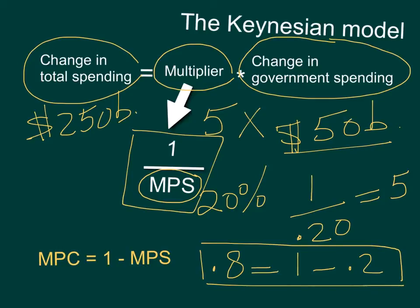So a problem might say the MPC is 0.8 and the government increases spending by 50. With an MPC of 0.8, you can figure out that the multiplier is 1 over 0.2, which is also 5, and then you will be able to get the change in total spending.